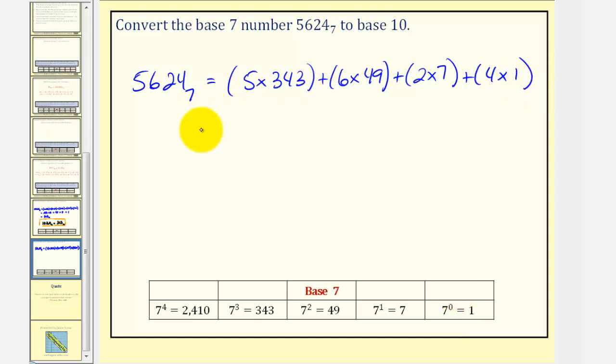And now we'll simplify. 5 times 343 is 1,715, plus 6 times 49 is 294, plus 14, plus 4, gives us 2,027, this would be base 10. So again, we can say that 5,624 base 7 is equal to 2,027 in base 10.